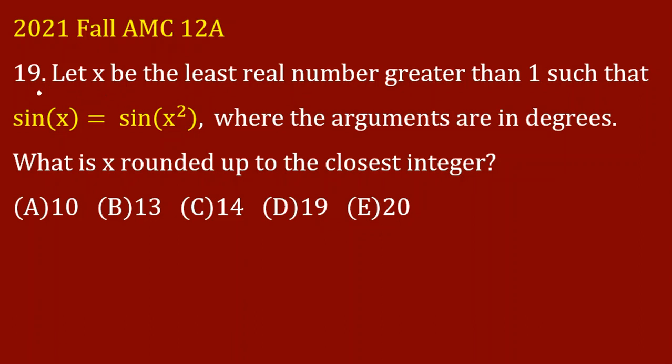Let's jump into the problem. Problem number 19 says: let x be the least real number greater than 1 such that sin(x) equals sin(x²), where the arguments are in degrees. What's x rounded up to the closest integer? The choices are 10, 13, 14, 19, or 20.